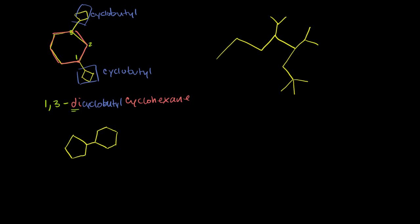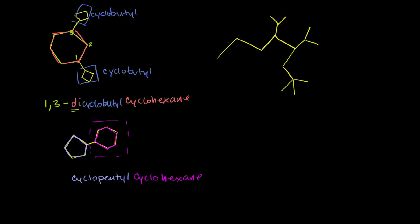Let's try this one right here. I have a five-carbon ring — one, two, three, four, five. And then I have a one, two, three, four, five, six carbon ring. So this six-carbon ring is going to be the main ring — that is a cyclohexane, six carbons in a cycle, all single bonds. And attached to that, I have a cyclopentyl group — 'yl' for the group. We don't have to number it because it's only one group attached to the main ring. So this is cyclopentyl attached to cyclohexane.